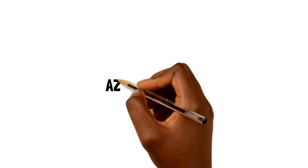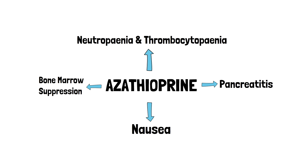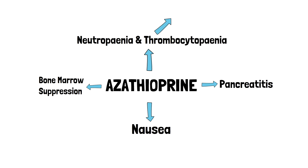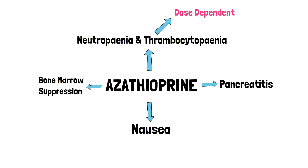Let's take a look at azathioprine, which is used in autoimmune conditions including IBD, rheumatoid arthritis, SLE, and myasthenia gravis. Here are some important side effects of this medication. It's worth noting that the risks of neutropenia and thrombocytopenia are dose dependent. Nausea is also common early on but usually settles in time.